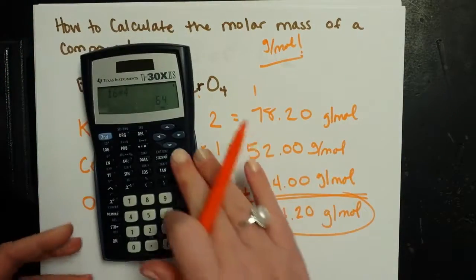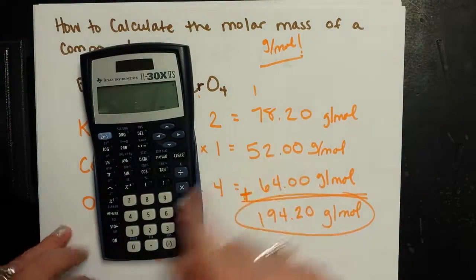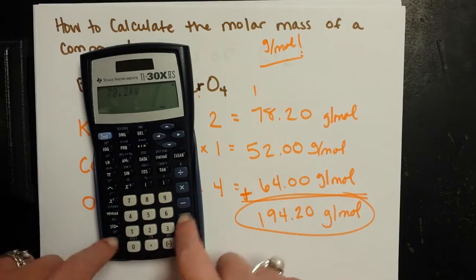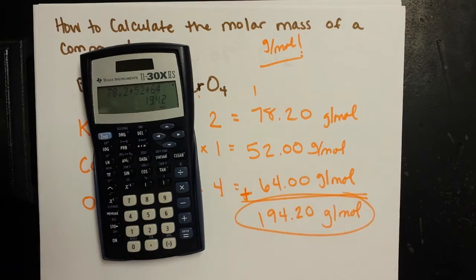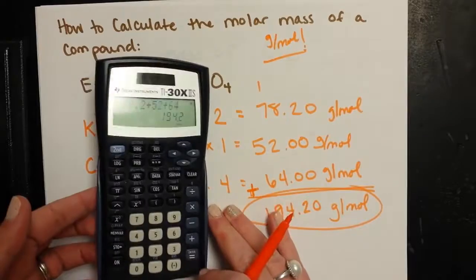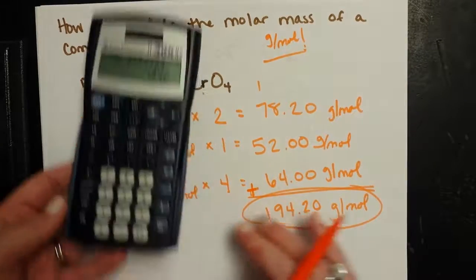Now you could either set it up like this and add it by hand, or you can plug everything into your calculator. You get 194.2 either way. You can't see that. There you go. All right.